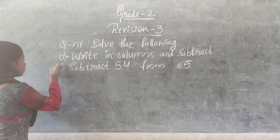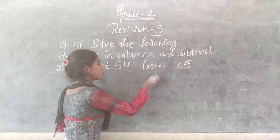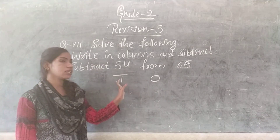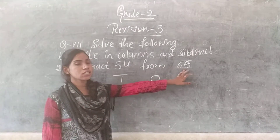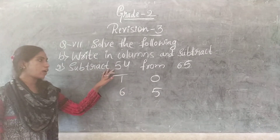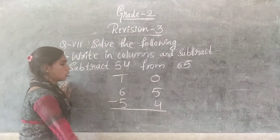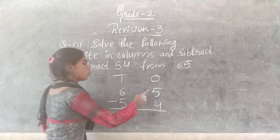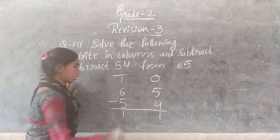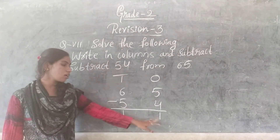The second one is subtract 54 from 65. Write 65 first, then write 54 below it. Now subtract: 5 minus 4 is 1, and 6 minus 5 is 1. The answer is 11.